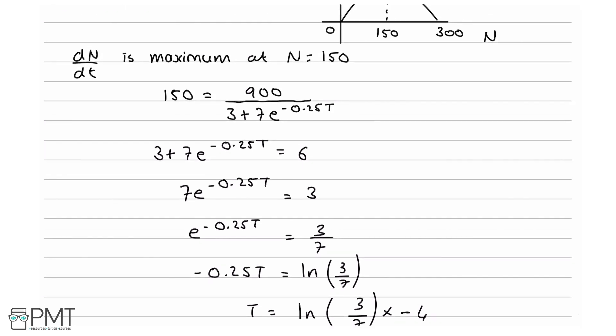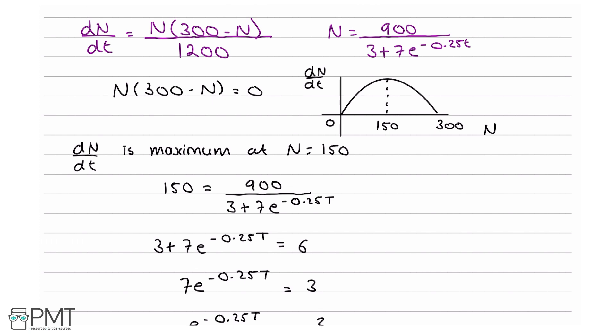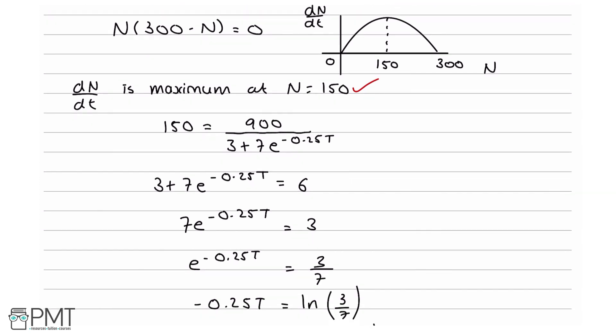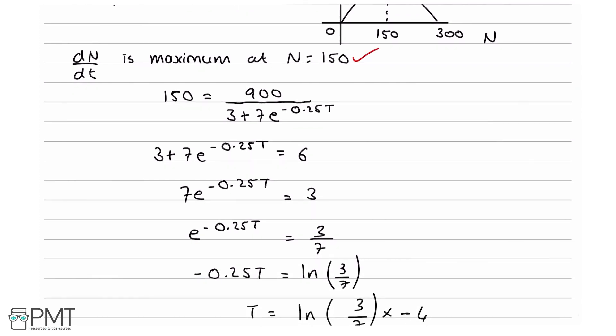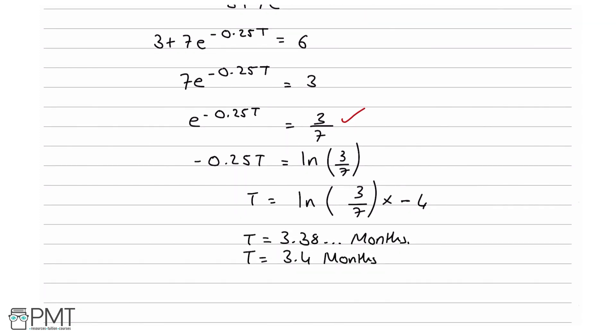This question is worth 4 marks. Your first mark comes from showing n equals 150. Your second mark comes from getting e to the minus 0.25T equals 3 over 7. Your third and fourth marks come from correct rearranging — either T equals minus 4 times ln(3 over 7) or T equals 3.4 months will earn both final marks.